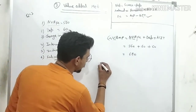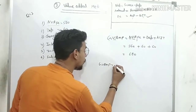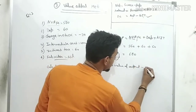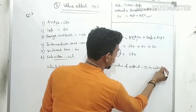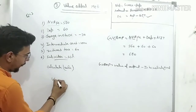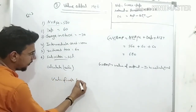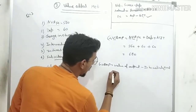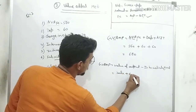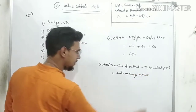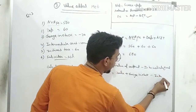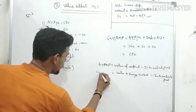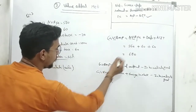Now, GVAMP's actual formula is: Value of Output minus Intermediate Goods. Value of Output = Sale + Change in Stock. So: GVAMP = Sale + Change in Stock − Intermediate Goods. Rearranging to find Sale: Sale = GVAMP − Change in Stock + Intermediate Goods + NIT adjustments.